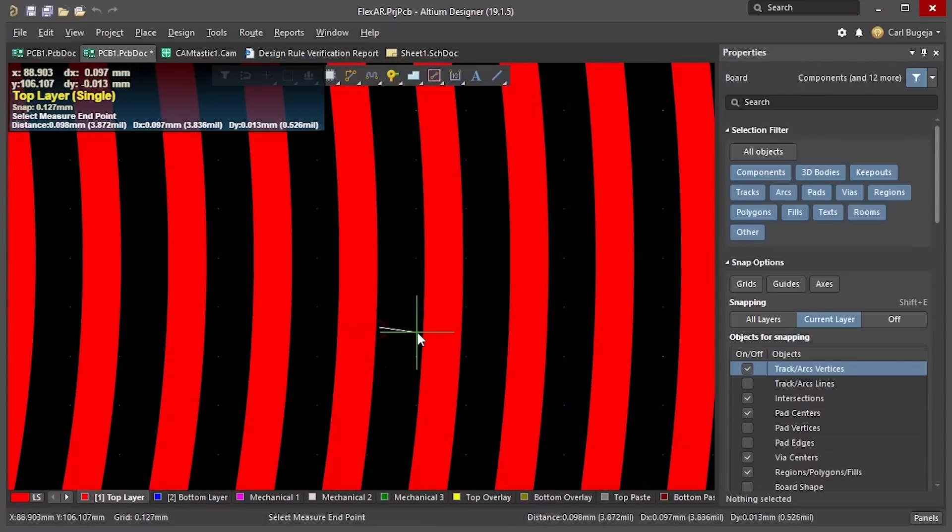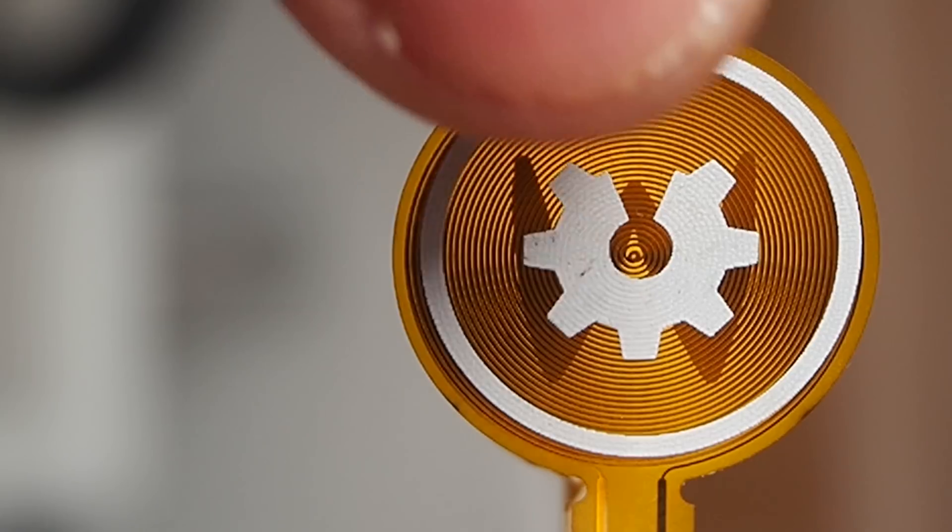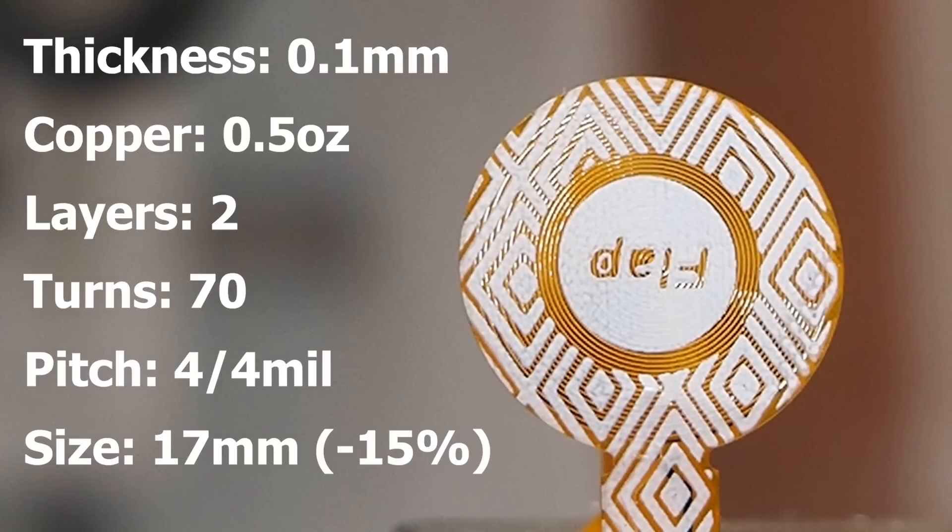But personally I don't like to go with the exact limit, so to be safer I consider 0.1 as the minimum limit. And this change reduced the size by 15%. Now given that the pitch cannot be further reduced, the layer count is the only other parameter that you can change to make the coil smaller.